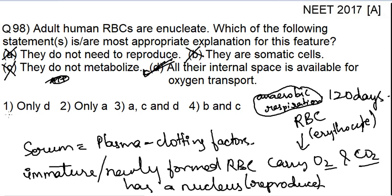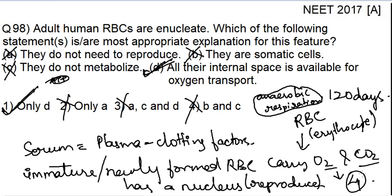The correct answer is only option D. Why are membrane-bound organelles and the nucleus absent in RBCs? Because the function of RBC is to carry oxygen, it must make room — space — for the oxygen. If the space is not present in the RBC, it cannot carry oxygen. So it eliminates the nucleus and some membrane-bound organelles to make space. One RBC can carry four oxygen molecules at a time — remember, molecules not atoms, meaning in the O2 form.